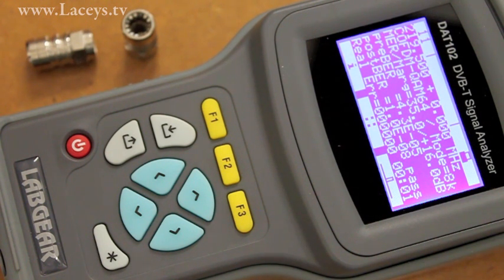Sixth row is post-BER after the Viterbi corrector. It's a similar logarithmic count, but as the Viterbi corrector repairs most errors, it's usually a high reading like the E8 we can see in this one.